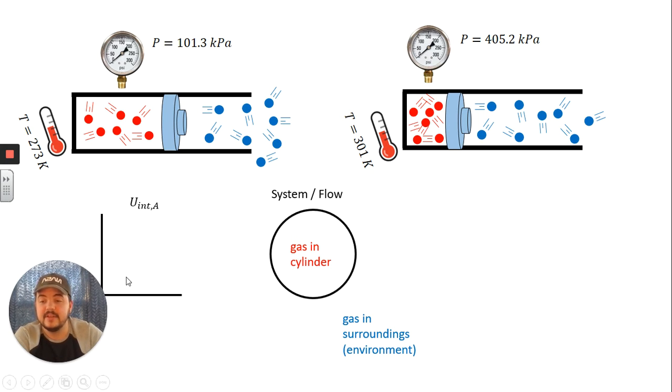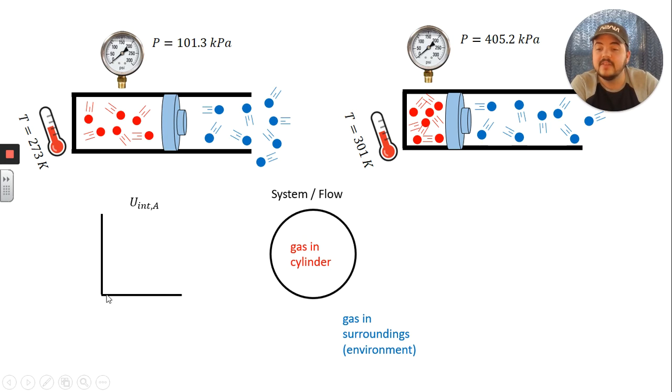Now we can draw some bar graphs to represent the energy flow. So here is the L in our LOL diagram, our internal energy at snapshot a. And let's just say it's two bars of energy or two blocks of energy. Energy.